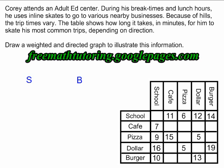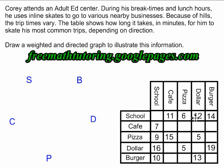Here I'm putting a B for the burger place, a D for the dollar store, a P for the pizza place, and a C for the cafe. Now all my vertices are represented. Next, I can see that from the school, Corey rollerblades to all four of the other businesses, and he rollerblades from all four of the other businesses back to the school, so all of those directions have to be shown.